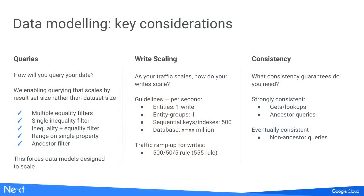A general rule our SRE team calls the 5-5-5 rule: when ramping up writes for the first time, start at a base rate of 500 writes per second and increase by 50% every five minutes. Using that ramp-up model, you can reach about 700,000 writes per second in under 90 minutes. The key is having that constant ramp-up profile to make sure the system splits and scales up appropriately.